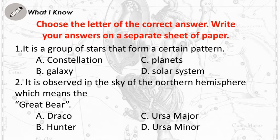Choose the letter of the correct answer. Write your answers on a separate sheet of paper. Question 1: It is a group of stars that form a certain pattern. A. Constellation B. Galaxy C. Planets D. Solar System.